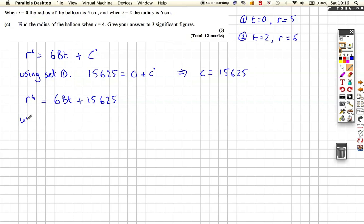Well, now we can use set 2, conditions set 2. When t is 2, r to the power of 6 - so we get 6 to the power of 6 now, rather than 5 to the power of 6, we get 46,656. I've just done that in my calculator. It's equal to 12b, because t is 2, 12b plus 15,625.